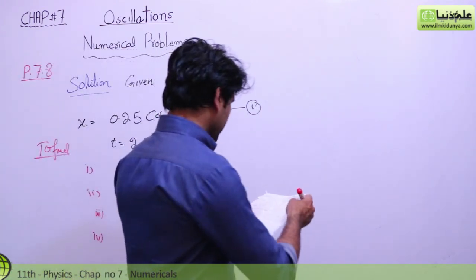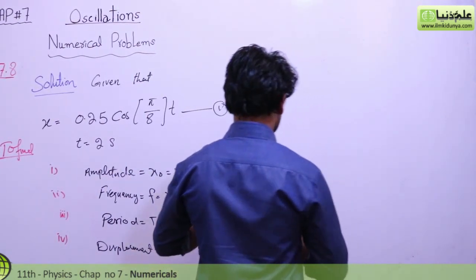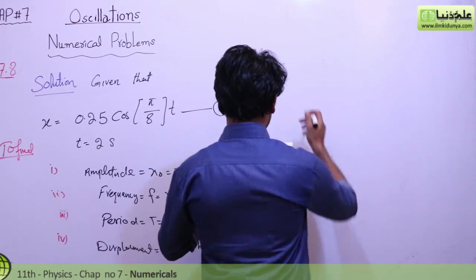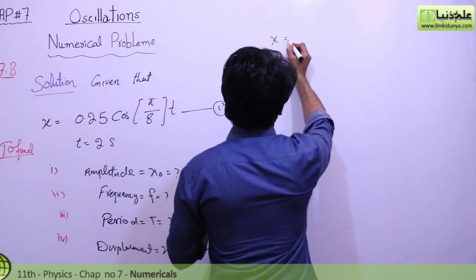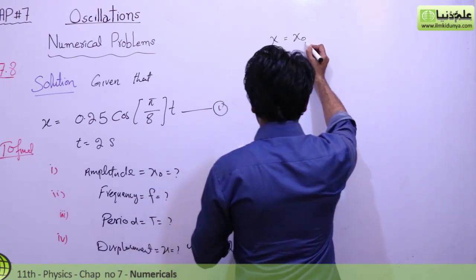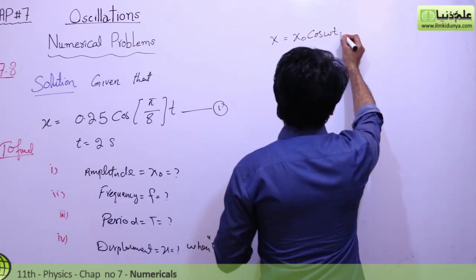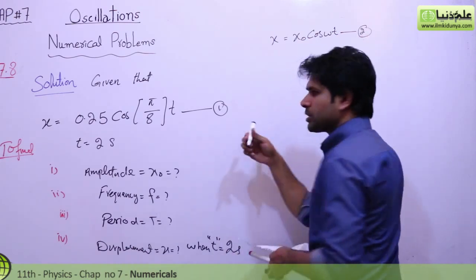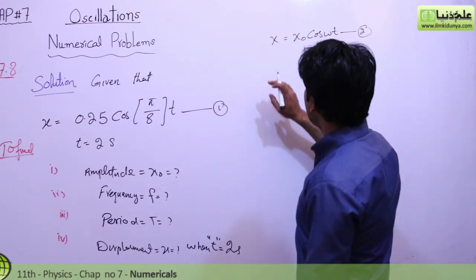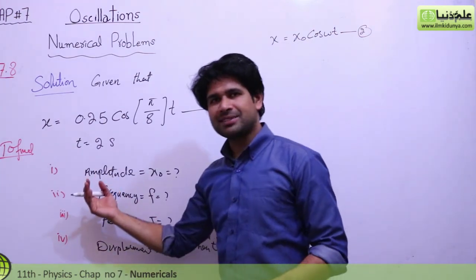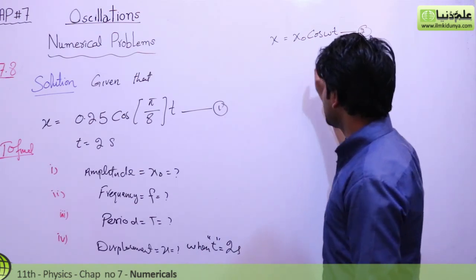Let's start the calculations. We know that from simple harmonic motion, the displacement is given as x = x₀ cos(ωt). We will call this equation number 2. Now you can see that the left-hand sides of both equation 1 and equation 2 are the same.